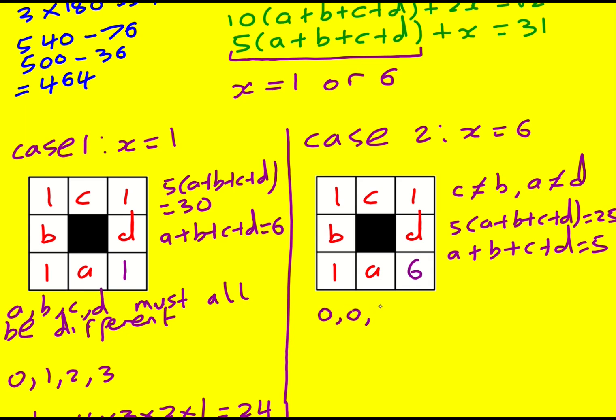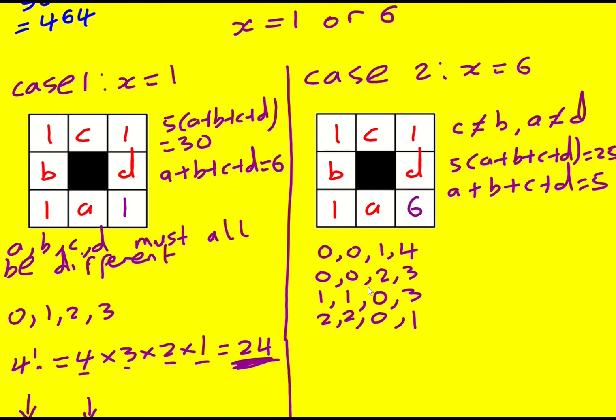To add to 5, we could have 0 and 0, and then 1 and 4. Or we could have 0 and 0 and 2 and 3. And that's the only way to do it with two zeros. We can't have them all different now, because then they would add to 6. So we're going to have to have two of them the same. 1 and 1 would get me to 2, and then I could have 0 and 3. That's the only way that I could get 5 using two ones. And then could I have 2 and 2? Yes, if I go with 0 and 1. So there's these four collections.